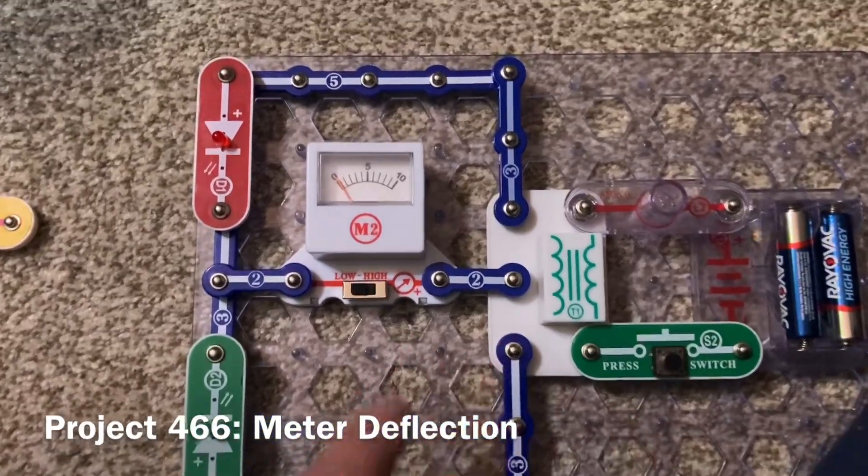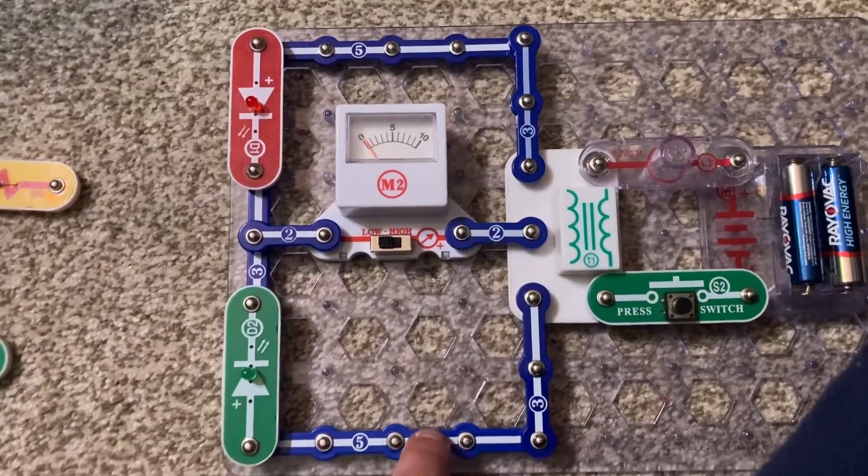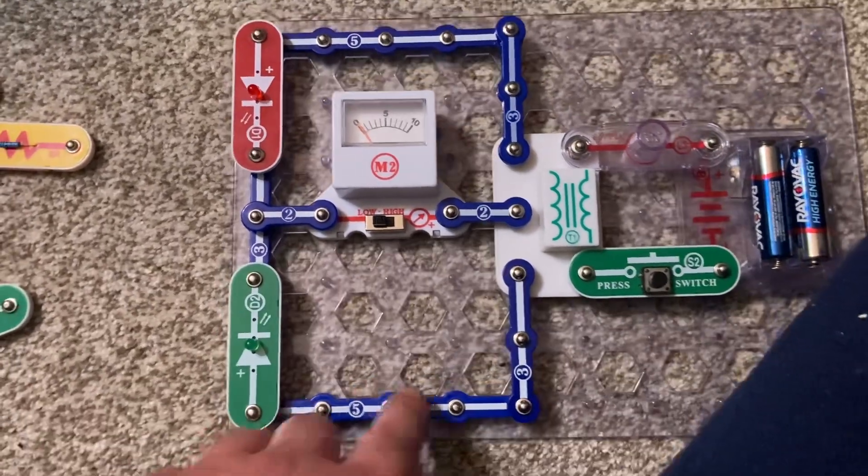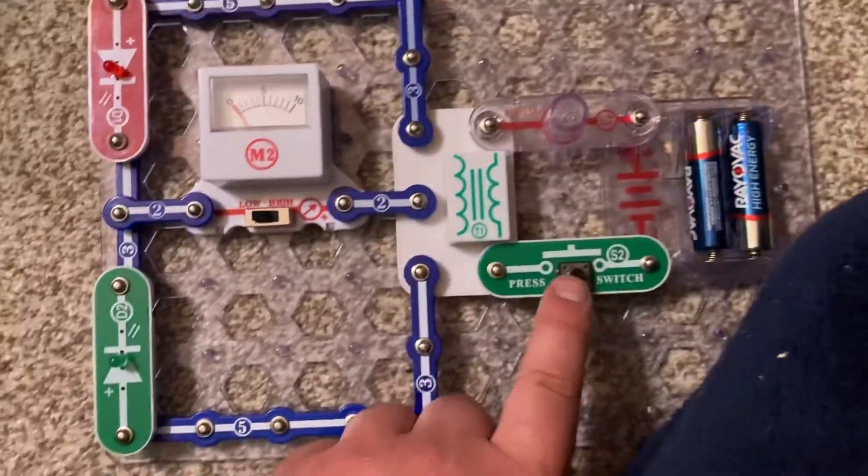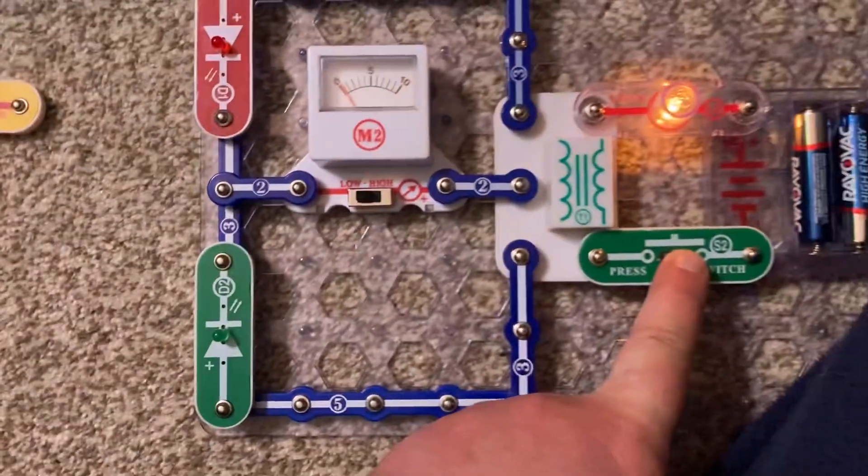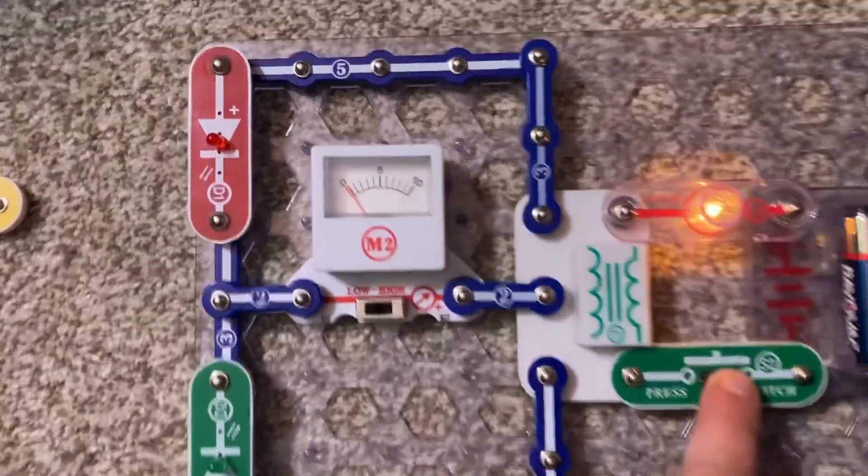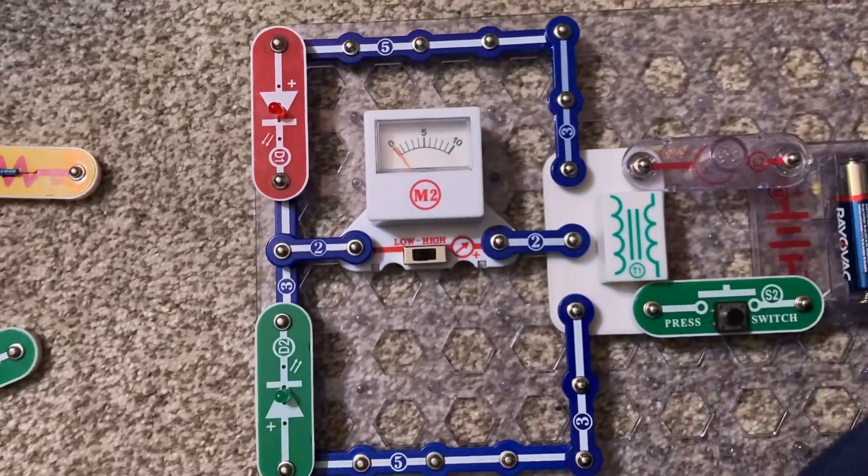This is a variant of project 358 motor deflection, if you have seen that one, except the positions of the LEDs are reversed. Now when I push and hold down the press switch, the green LED flashes. Then when I release, the red LED blinks.